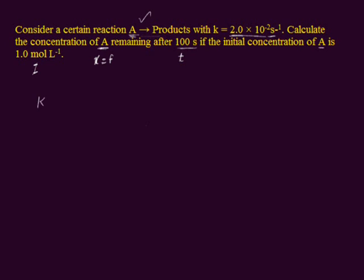The formula is K = (2.303/t) × log(initial amount of the reactant / final amount of the reactants). Rate constant value is given, time is also given, initial amount is also given and you have to calculate final amount, that is the remaining amount.